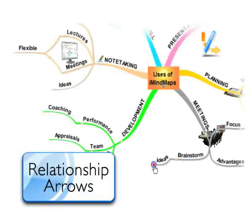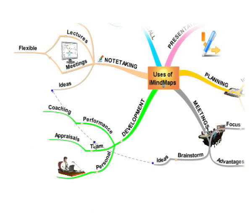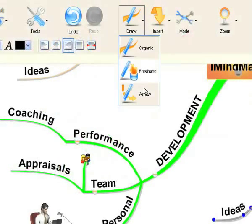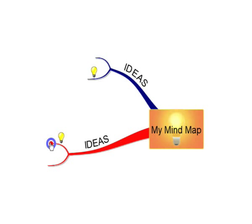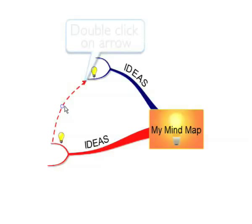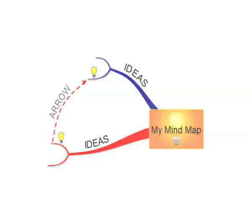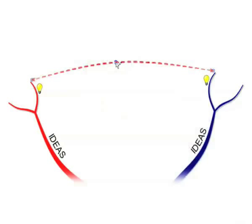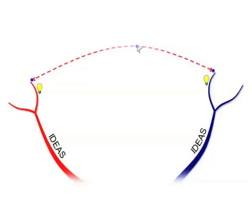You can link similar ideas or themes to each other by using relationship arrows. To create an arrow, click on the Draw menu and select Arrow. Click and drag from the end of the branch you want the arrow to begin from and continue dragging until you reach the connecting branch. To add a text label, double click on the arrow and type. You can also format it by right mouse clicking and selecting Arrow. Finally, to change the curve of your arrow, use its control points.